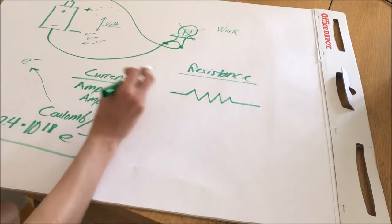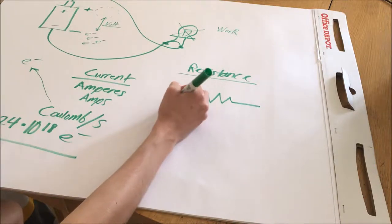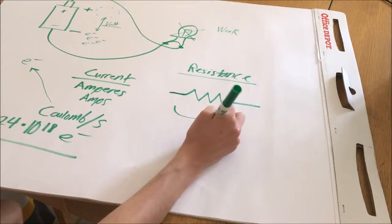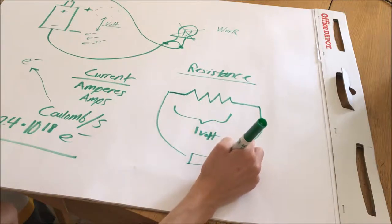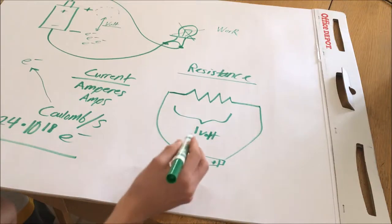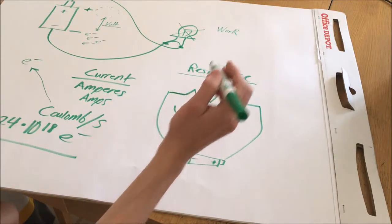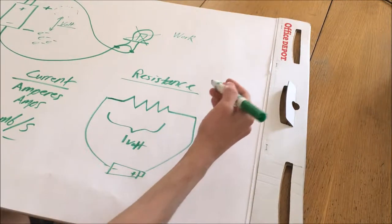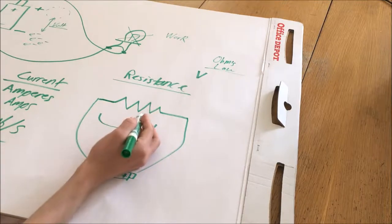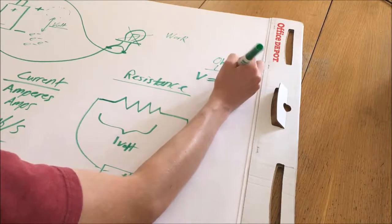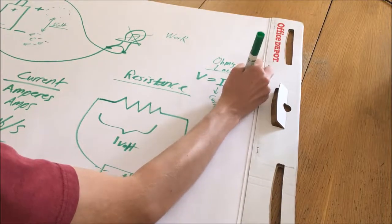This is a resistance against the flow of current through the circuit. If you had a certain amount of voltage — say one volt across this resistor — how do we know how much current is going to flow? That relationship is determined by Ohm's Law. Ohm's Law states that the voltage across a resistor is equal to the product of the current I multiplied by the resistance R across that circuit.